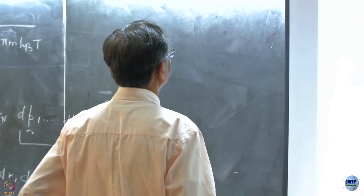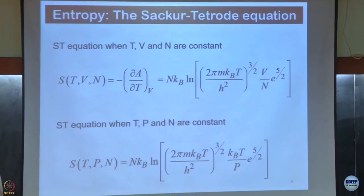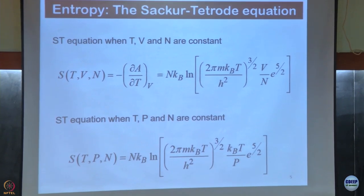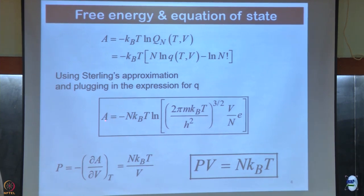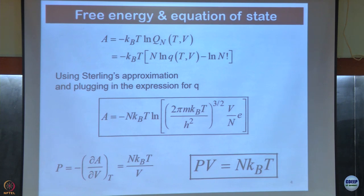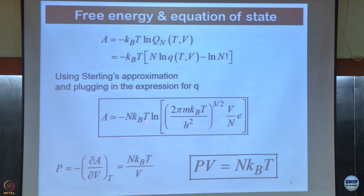Then this next result is very important. Sackur-Tetrode equation follows trivially. Then you go now, take it with respect to entropy is negative temperature derivative of free energy, and that when you do, I take dA/dT. What can happen? This is T to the power 3/2 here, so that will become T to the power 5/2. So first term I take dA/dT, first term we will just remove this term and have NkB ln times this factor 2πmkT to the power 3/2.